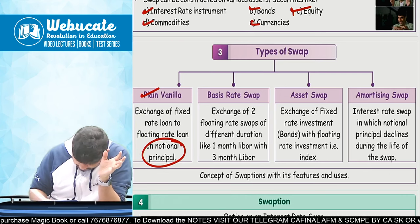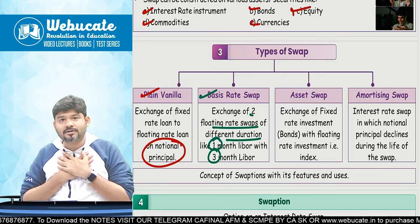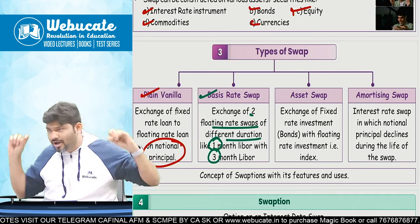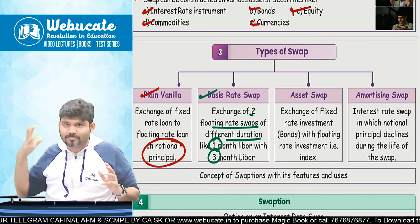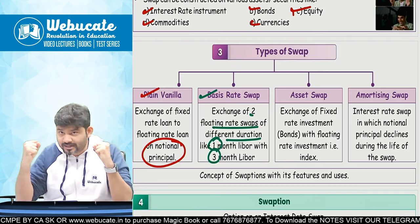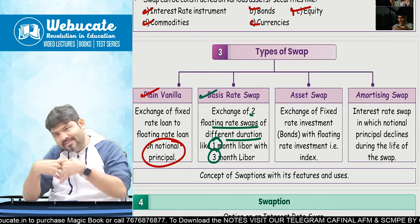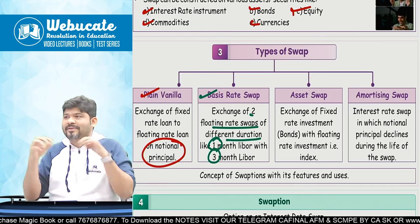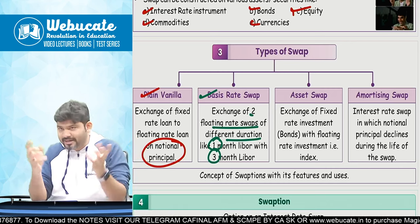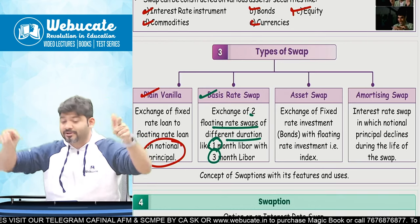Second is Basis Rate Swap — exchange of two floating rate swaps of different durations. In plain vanilla everything is the same duration and same notional principal. In basis rate swap, your floating rate is swapped with a floating rate but the duration is different — one may be a one-month floating rate, the other a three-month floating rate. When they create a swap with each other, it is called a basis rate swap. Practically in our exam we only solve plain vanilla, but basis rate swap can exist — floating rate with floating rate, different durations.